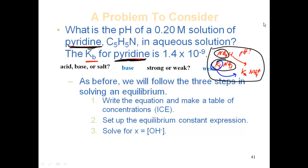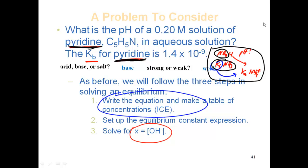We'll write the equation and make the ICE table, then set up the equilibrium constant expression, and then solve for x. The major difference here is that x is going to equal hydroxide concentration, not hydronium. So we set it up the same way — write the equation and ICE table. I strongly suggest you do this every time; don't take shortcuts.